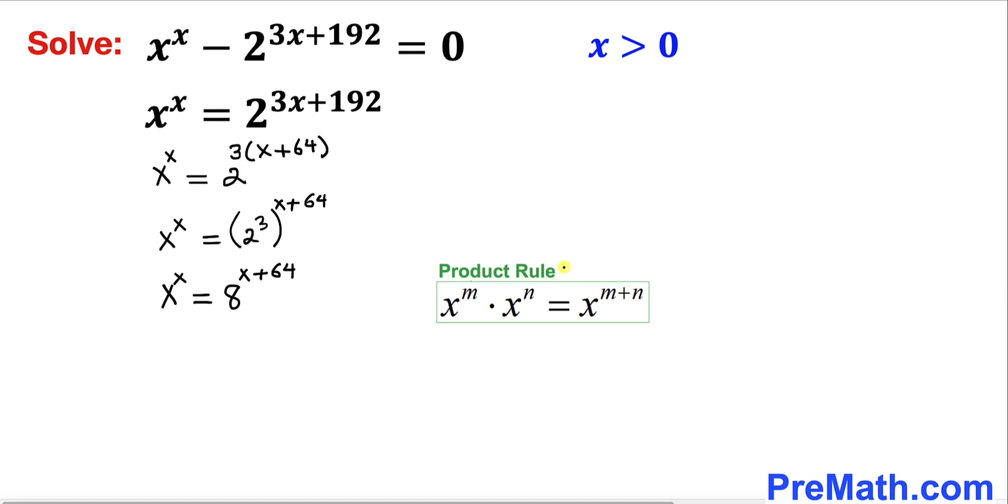Now let's recall the product rule. According to this rule, the right hand side can be written as 8^x × 8^64.